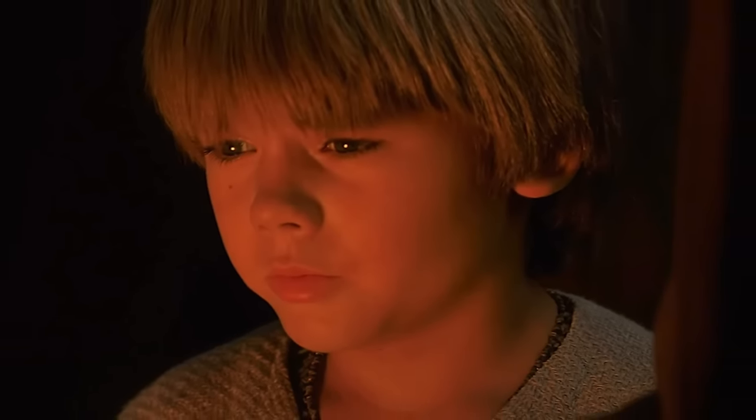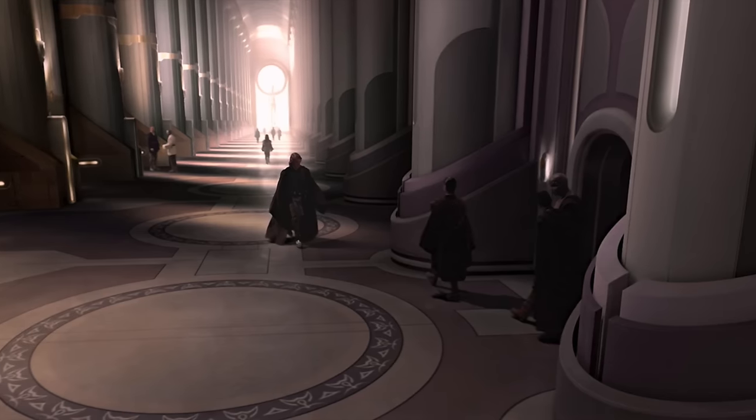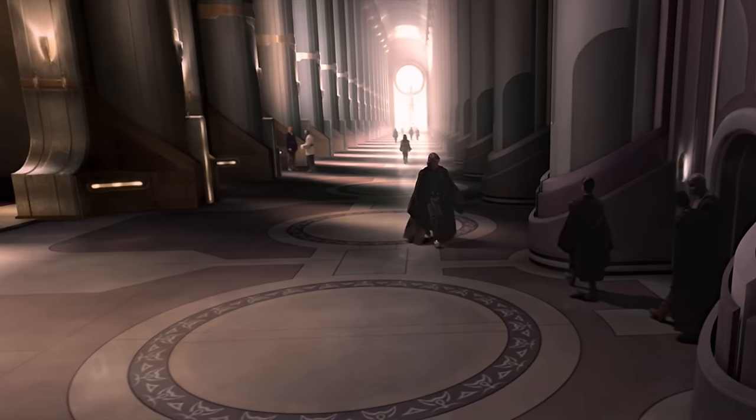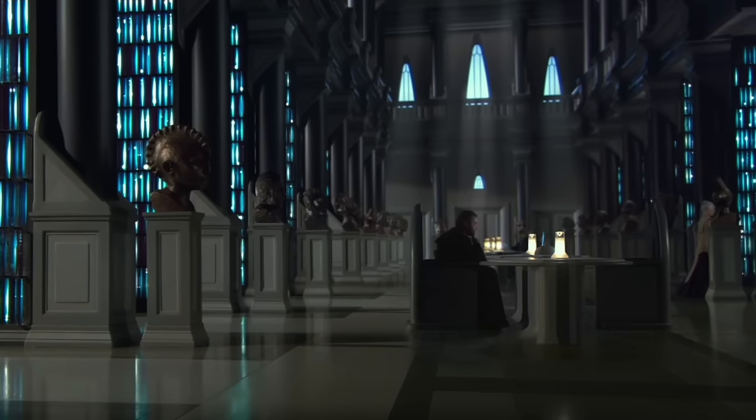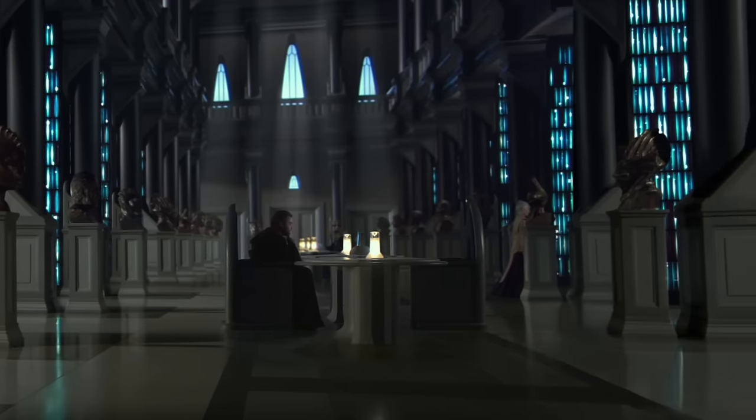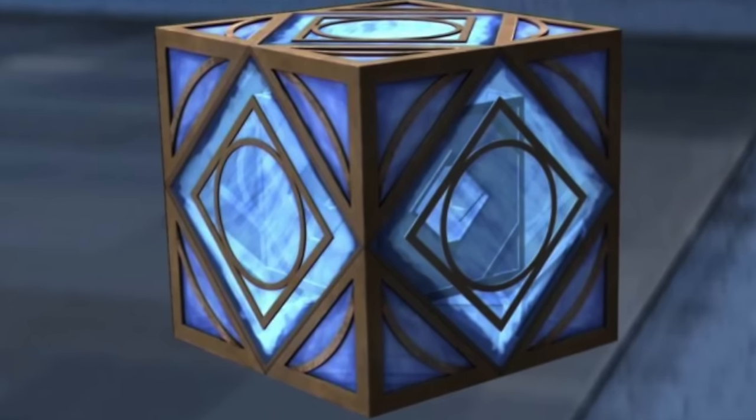Skywalker walked throughout the massive temple looking for Obi-Wan. He decided that he would check the archives, considering Kenobi was just about always inside the archives, reading, and whatnot. When Anakin walked in, they were pretty much empty, so he looked around. If Obi-Wan was here, then surely he would find him quickly. Anakin stumbled forward and he saw a holocron.